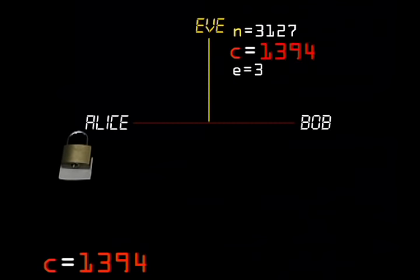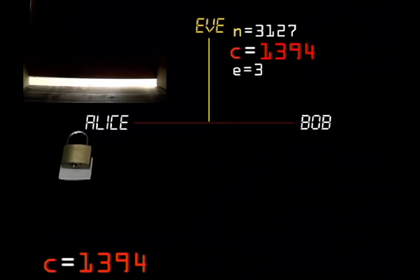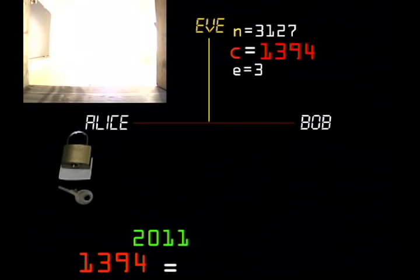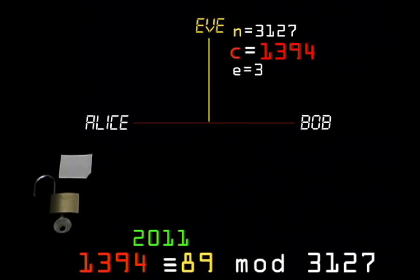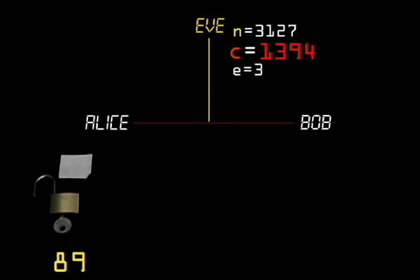Finally, Alice decrypts his message using her private key D, accessed through her trapdoor. C to the power of d mod n equals Bob's original message m.